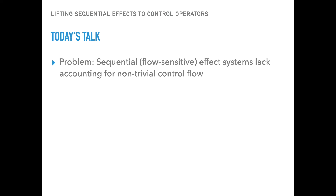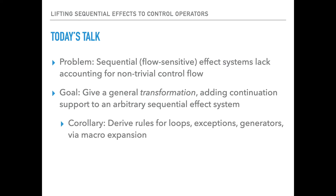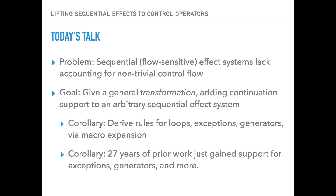So what this work is really about is how to make that work — how to take one of these effect systems that may not know about exceptions or generators and automatically add support for these things. Today's talk tackles the problem that sequential effect systems currently lack a standard account for non-trivial control flow. We're going to give a transformation that takes an arbitrary sequential effect system, just some effect quantale, and adds support for tagged delimited continuations. Once we've done that, because we can macro express all sorts of other control constructs in terms of tagged delimited continuations, we can also derive type rules for those specific constructs. And there are 27 years of prior work that fits into this effect quantale box, which we can now use with these more advanced control constructs.